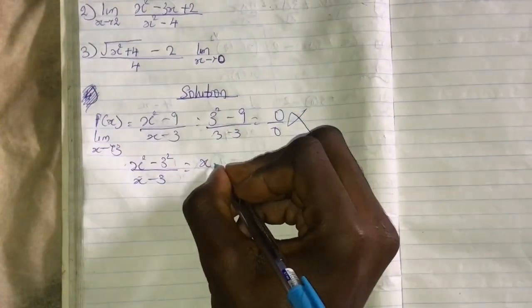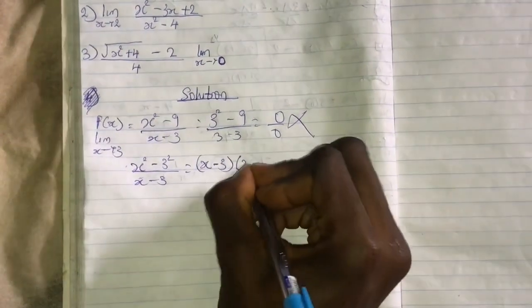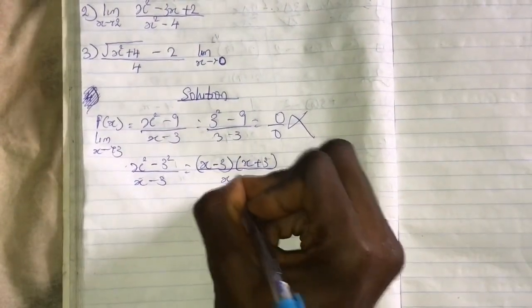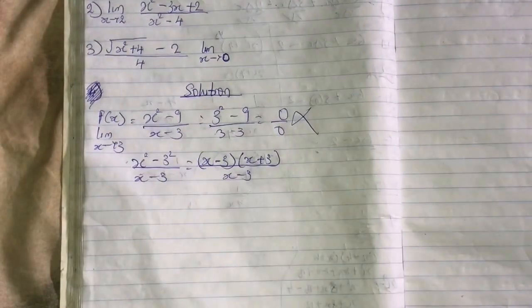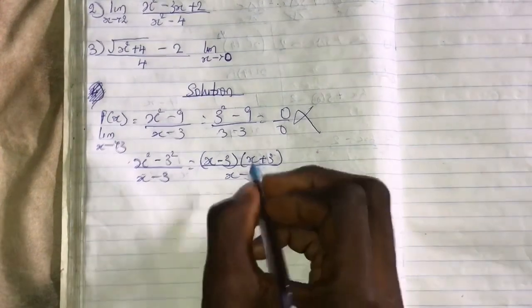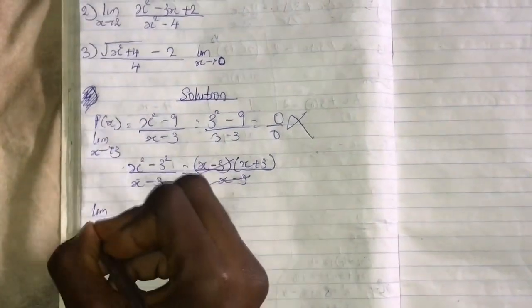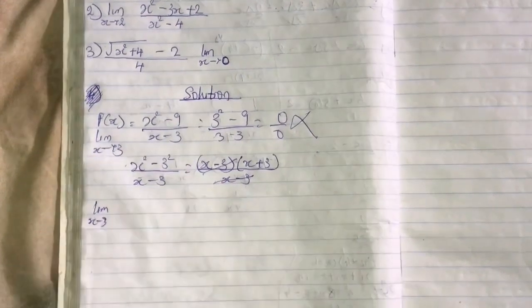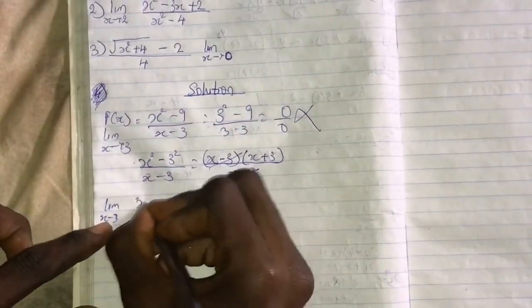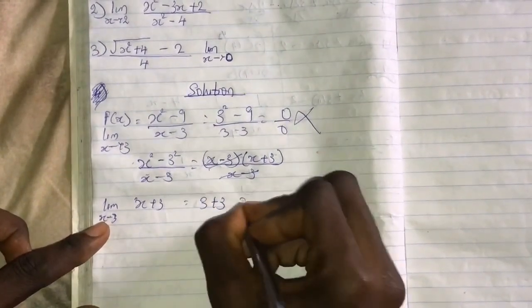This is (x^2 - 9)/(x - 3). So if you factorize this you have (x - 3)(x + 3), then you have (x - 3). Because I'm trying to break it down to the simplest form first. Then this will cancel this, right? And that's the limit as x approaches 3. So I'm left with x + 3, so it's now 3 + 3, therefore answer is 6.